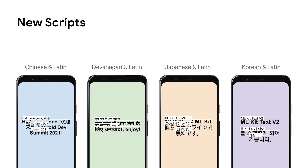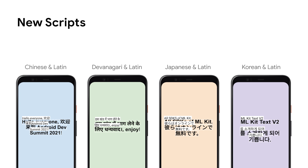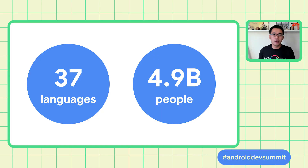The most exciting feature of V2 is the ability to support multiple scripts. In addition to Latin, there are four new scripts: Chinese, Devanagari, Japanese, and Korean. Each one corresponds to an independent TensorFlow Lite model that also supports Latin scripts. You can choose one or more of the four options, giving five options available in total, allowing for high flexibility and reduced installation size on-device. V2 now supports 37 languages, representing around 4.9 billion people worldwide.